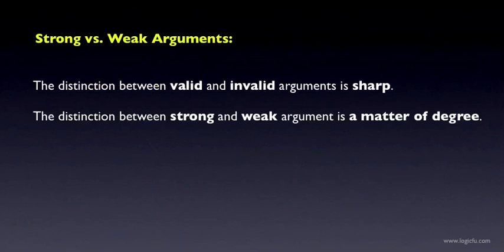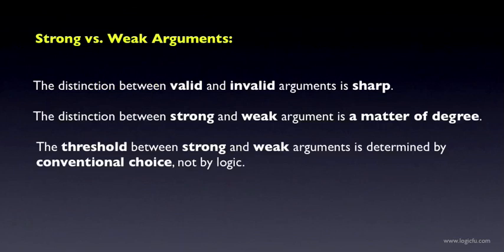It turns out that there is no principled answer to this question. The distinction between valid and invalid arguments is a sharp one — every argument is either valid or invalid, and there are no degrees of validity. Validity is like pregnancy: you can't be almost pregnant or a little bit pregnant. The distinction between strong and weak arguments, on the other hand, is a matter of degree. It does make sense to say that an argument is very strong, moderately strong, moderately weak, or very weak. But the threshold between weak and strong arguments isn't fixed or specified by logic — it is, in fact, a conventional choice that we make. We decide when the premises provide sufficient evidence or reason to justify accepting the conclusion. There are no formal principles of logic that make this decision for us.